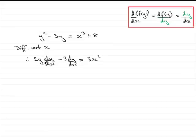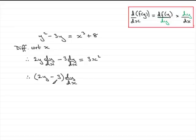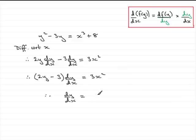The next step is to factorise the left side, noting that dy/dx is a common factor. We write dy/dx at the rear of the bracket — so we get (2y minus 3) times dy/dx equals 3x squared. Then divide both sides by (2y minus 3), giving dy/dx equals 3x squared all divided by 2y minus 3.